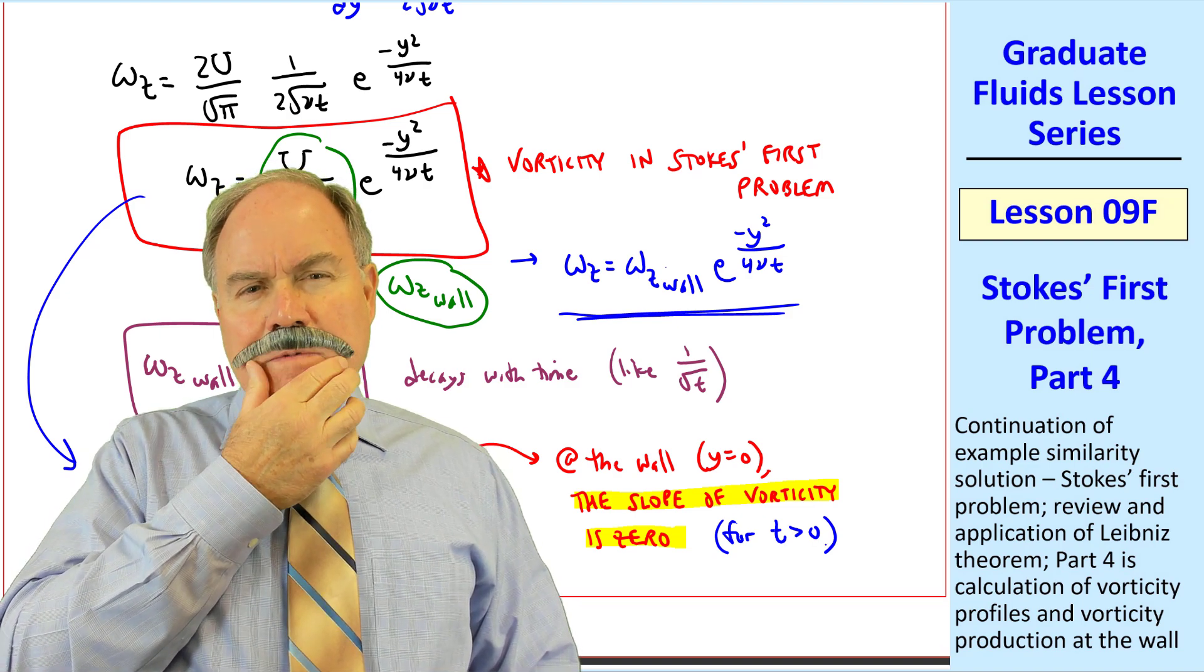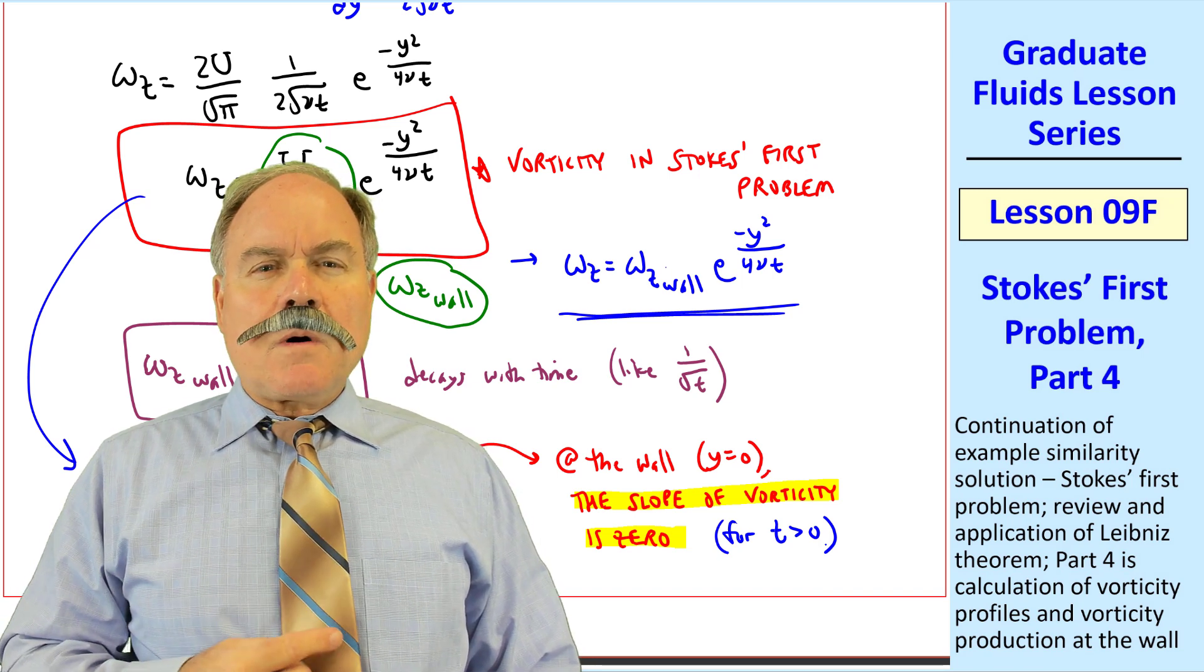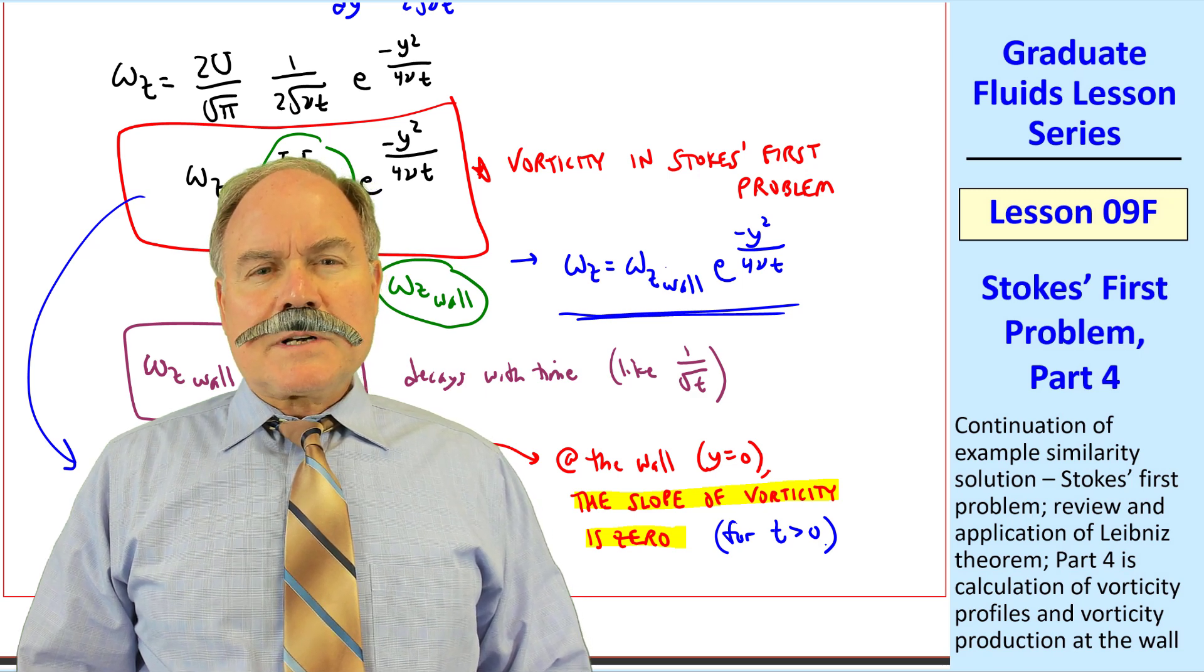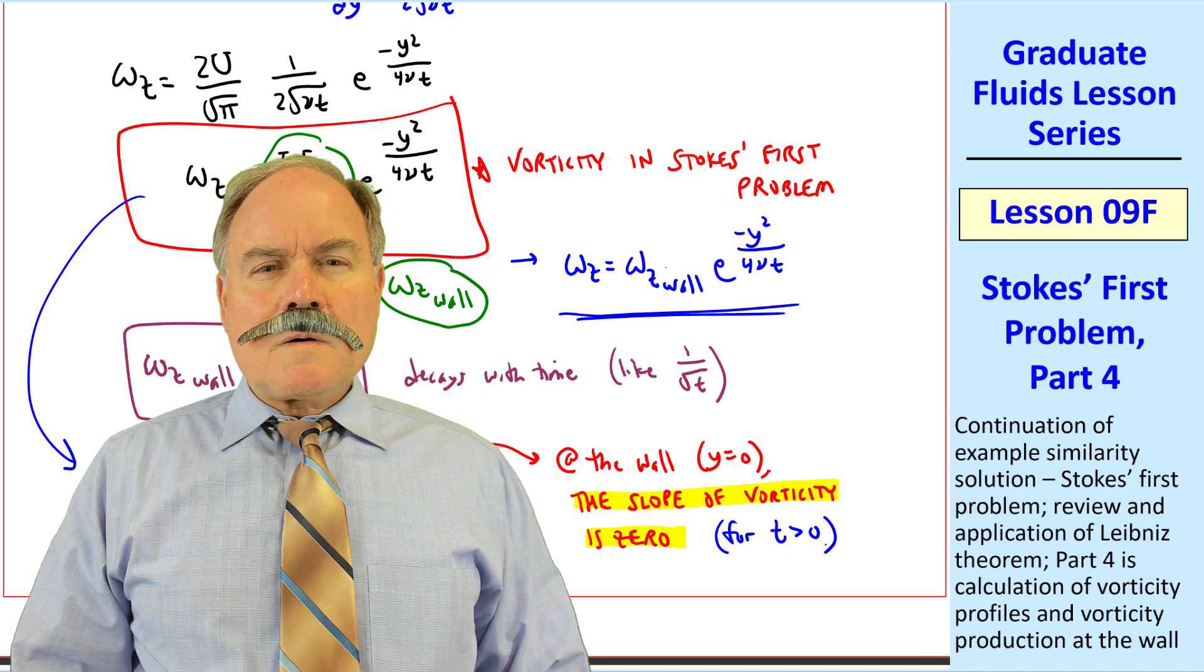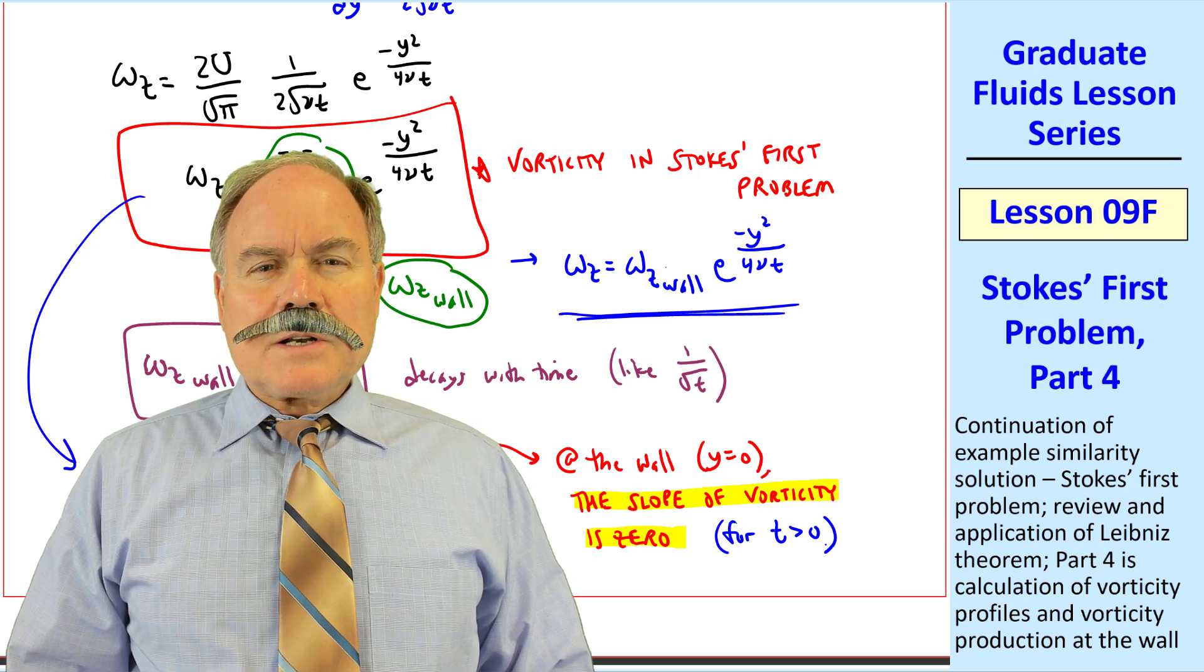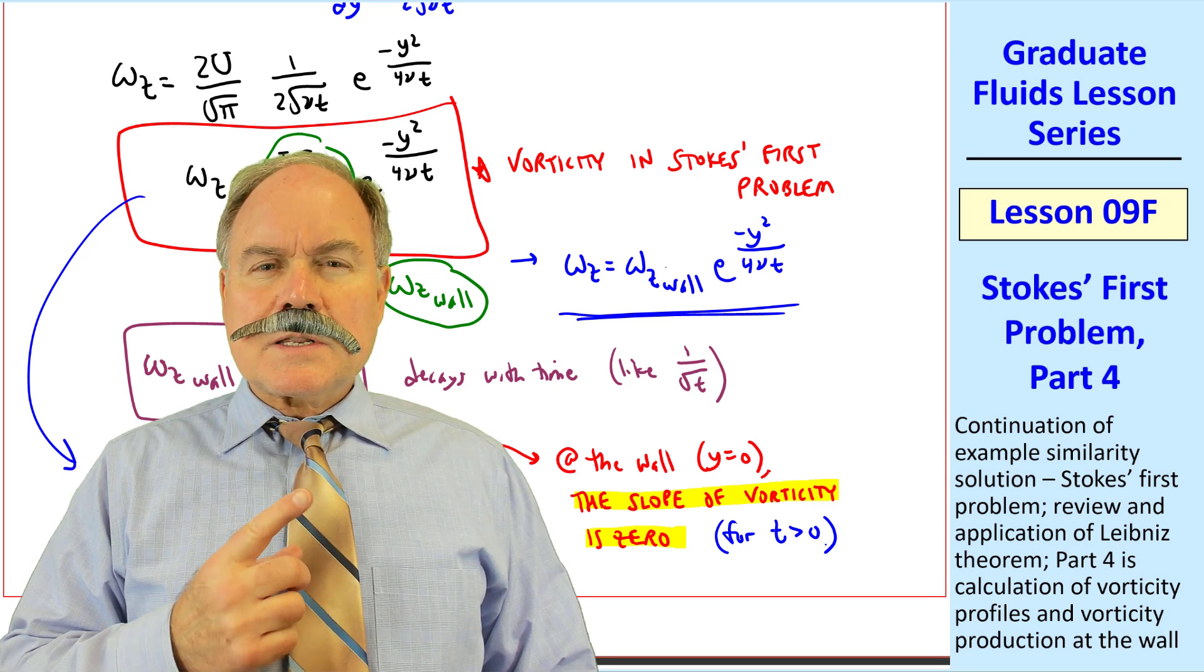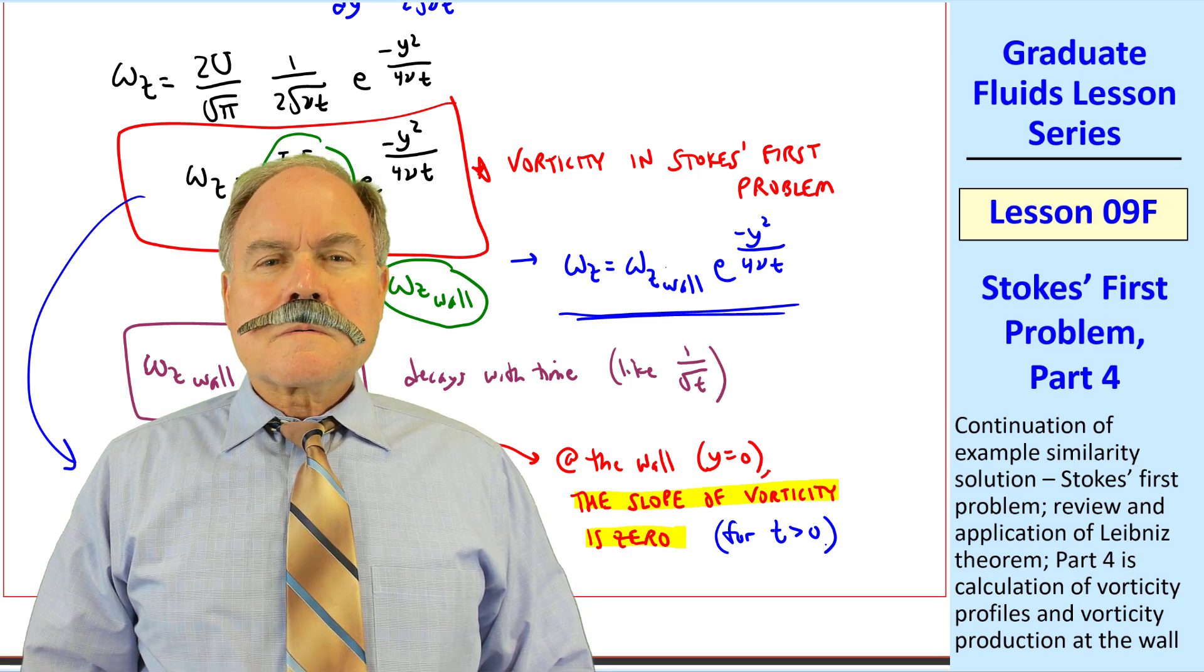But sir, I seem to recall in a previous lesson you said that in order for vorticity to be produced at a wall, there must be a pressure gradient in the flow direction. But here, nothing is a function of x, so del p del x must be zero. And you also said that there must be a vorticity gradient at the wall in the normal direction for there to be vorticity production. But you just showed us that del omega z del y is zero at the wall. So sir, where and how is vorticity produced in this problem? Great question, Sean. That was back in lessons 6c and 6d, if anyone wants to look back.